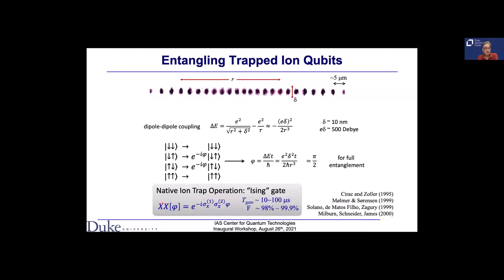The entangling gate typically takes 10 to a few hundred microseconds. The community started from about 98% fidelity, but recent demonstrations have reached 99.9% or better. To get there, all uncertainties, drifts, and noise sources must be removed. The fundamental limit from spontaneous emission is probably in the 10⁻⁵ range; until you reach that, it's all about systematics and making your system work better.